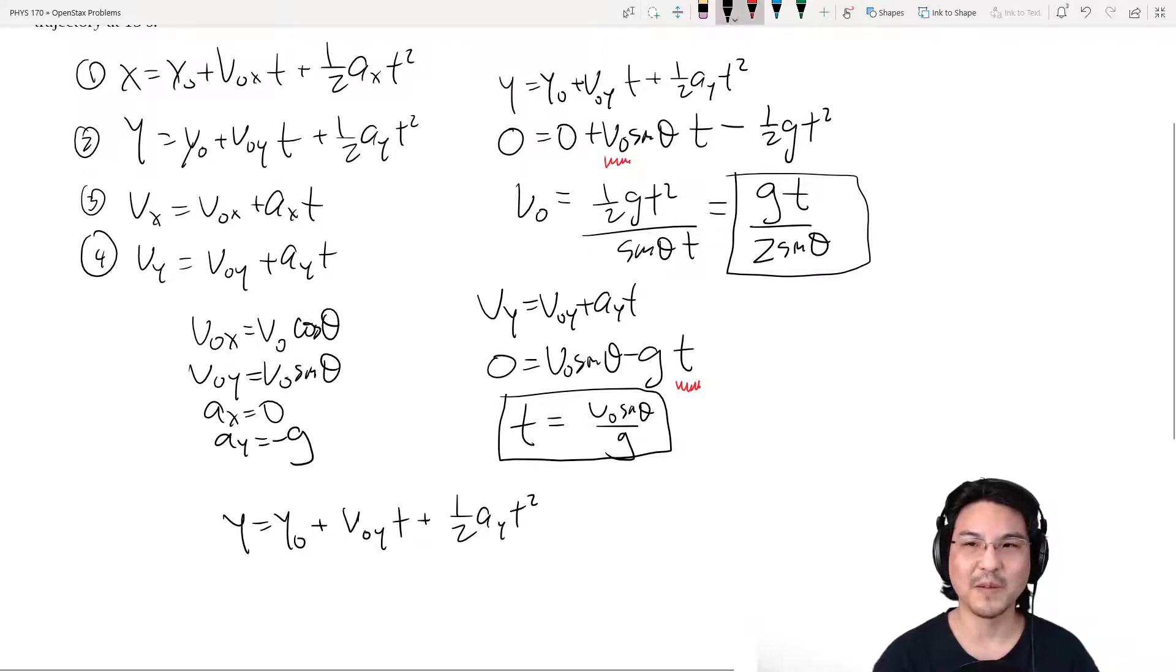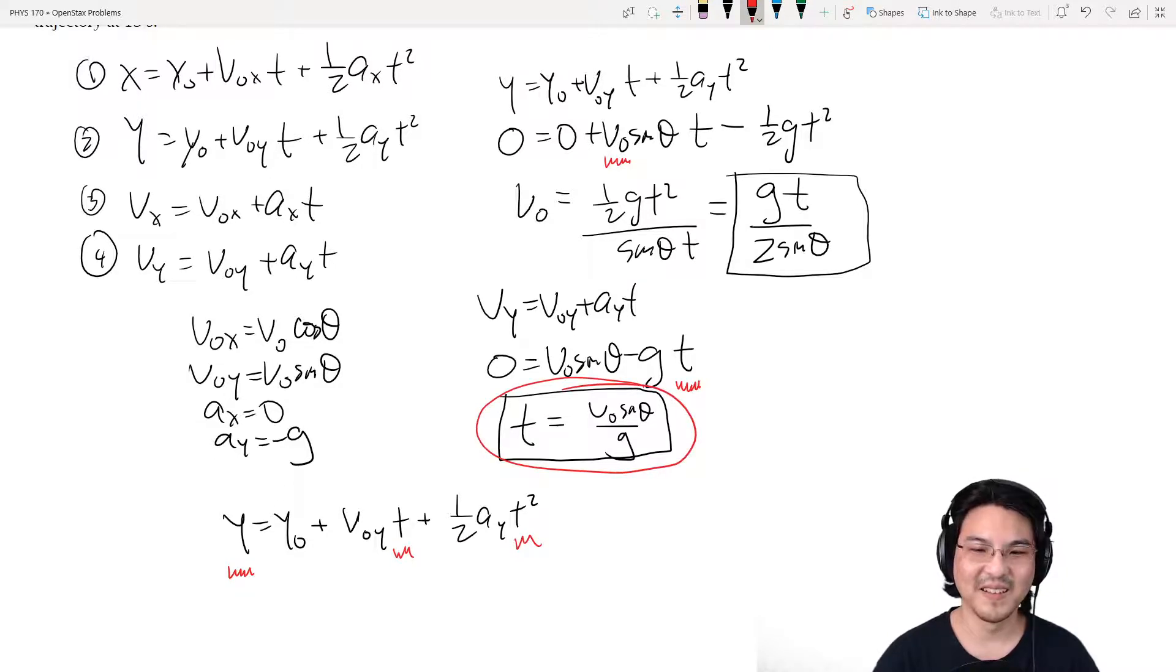Okay, and then what do we know and what do we not know? This is, y is what we're looking for. So we don't know that. This is zero. V-naught y, we know it. Time, we don't know. Or do we? Right here. So that goes right here.